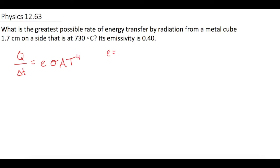So they give us E as 0.4. And we are given the Stefan-Boltzmann constant which is 5.67 times 10 to the negative 8.